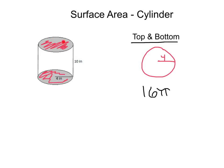We can see that the top and bottom shapes are just circles with a radius of 4. Using pi r squared, we'll get an area of 16 pi for both the top and bottom circles.